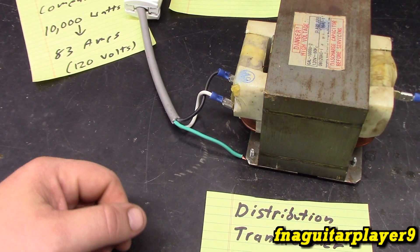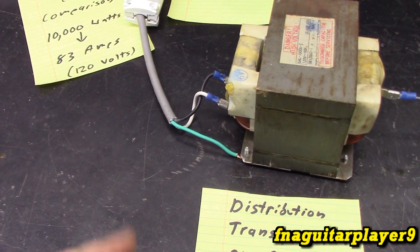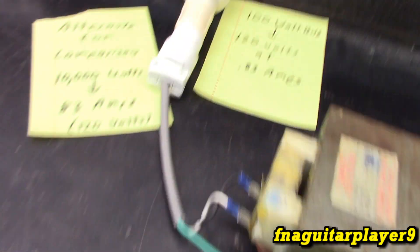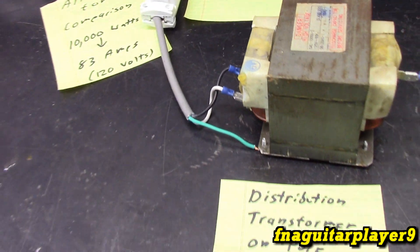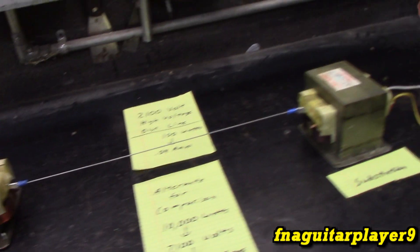But in order to carry the 83 amps, you're going to have to have a wire bigger than this feeding this 50 amp receptacle right there. So this is the reason high voltage is used.